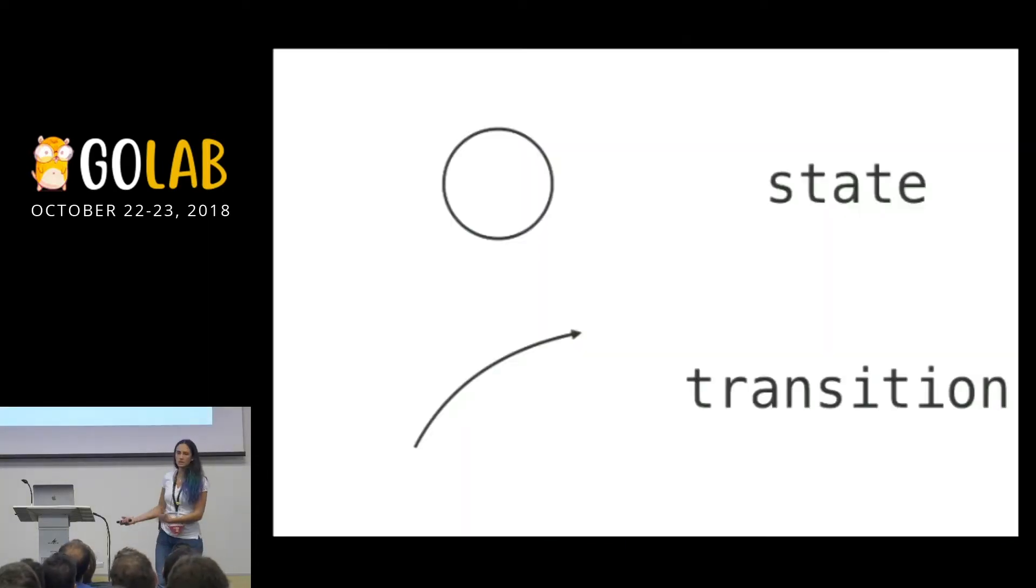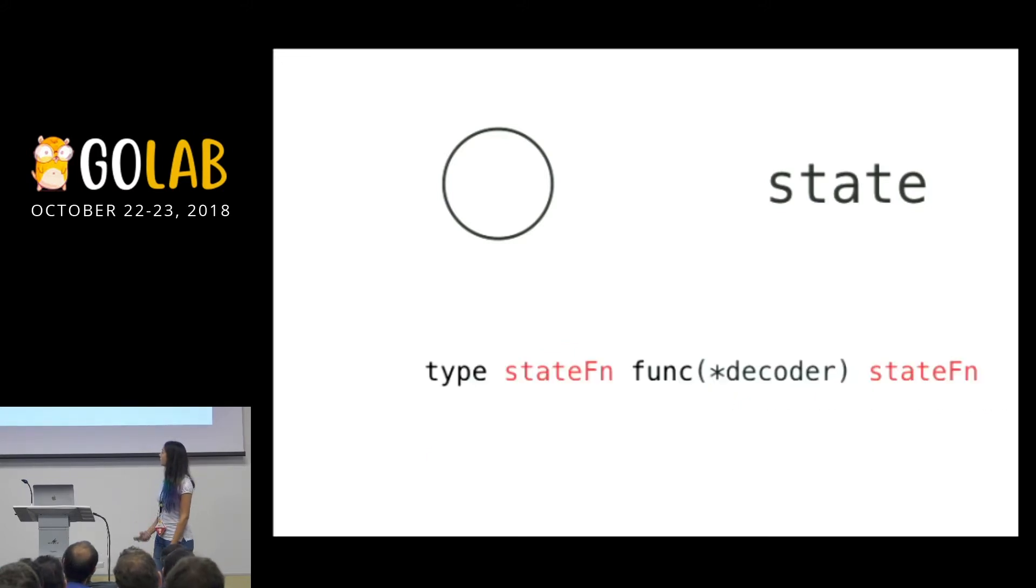Okay, so we have states and transitions. Every circle is a state. Every transition is an arrow. We define a state as a function that reads a symbol of the input and returns the next state. Nothing more. Like from every state that is like a circle, you have arrows that point to other states. And that's where you understand where to go and what state to return. Yeah, so every time you need an input, a symbol of input, you need a state and a function that returns the next state.